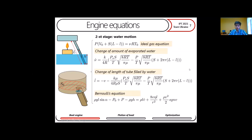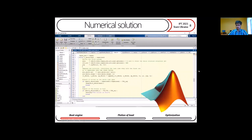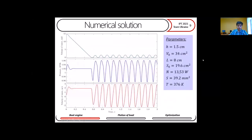In the second stage we consider the situation where water is only inside the tube. Here we again have the ideal gas equation, but now we consider condensation on the walls of the tube. We have a new variable corresponding to the length of the tube filled by water, and we write down Bernoulli's equation for this situation. We then solve this system numerically using MATLAB.